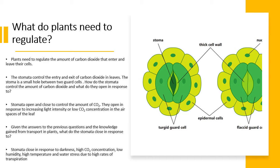The stomata are like tiny openings that are surrounded by guard cells. These guard cells can determine whether or not the stomata will open. The stomata open to control the amount of CO2 and also respond to increasing light intensity. When light intensity is high, the stomata are likely to open. When low CO2 concentration is detected in the leaves, the stomata will open to allow more CO2 in. Conversely, when there is low light intensity, the stomata will close, so in darkness the stomata are mostly closed. When there's high CO2 concentration inside the leaves, the stomata will also close.